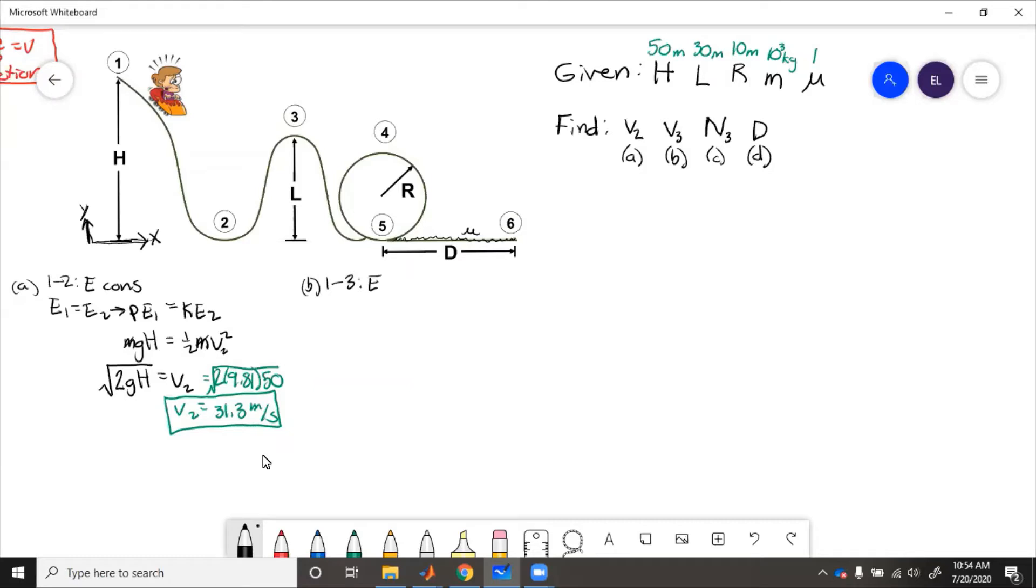So from one to three, we know that energy is conserved. So mgh equals one-half mv3 squared plus mgl. So we have potential energy at one, kinetic energy at three, and potential energy at three. Now the nice thing here is that since energy is conserved from all the way from one through five, then we can skip step two and just go straight from one to three. So that way, if for some reason we had gotten velocity at state two wrong, then we can still get part b of this problem right because we know what mgh is.